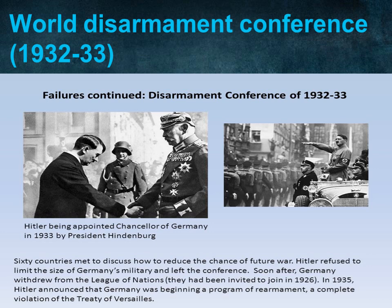The conference was a big failure because the major powers remained rigid and no major decision was taken. Germany continuously demanded equality of armaments with France, but France argued that a militarily weak Germany was the only way to a peaceful Europe. By 1932-33 Germany was becoming powerful under Adolf Hitler. Through the Treaty of Versailles, Germany had been made to demilitarize and disarm, but Hitler was pushing against those constraints.